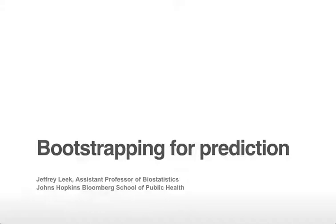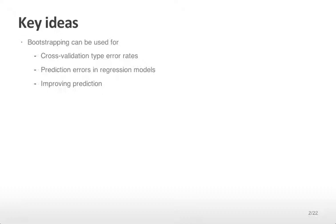In the previous lecture we talked about the general purpose bootstrap. In this lecture we're going to be talking about using bootstrapping for prediction, either for calculating prediction errors or for improving predictions from particular types of prediction models like classification trees or regression models. Bootstrapping can be used for cross-validation type error rates, prediction errors in regression models, but most importantly it can be used to improve prediction in very clever ways.